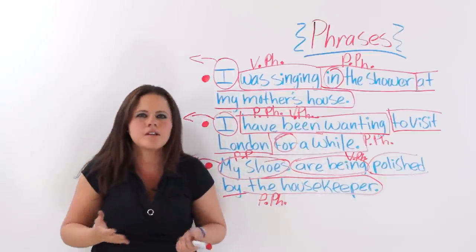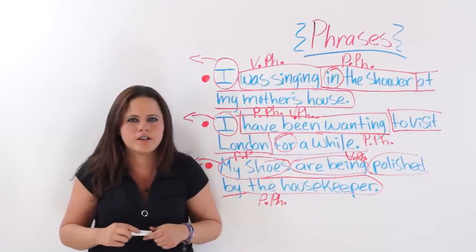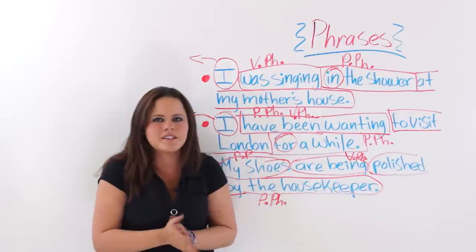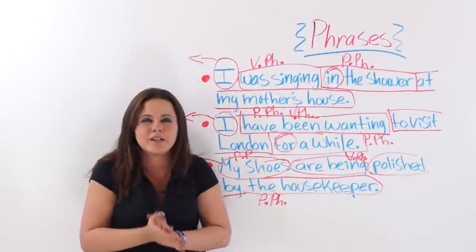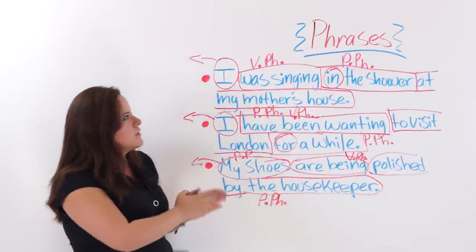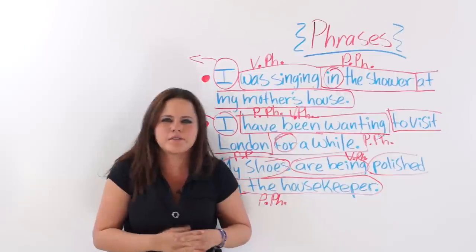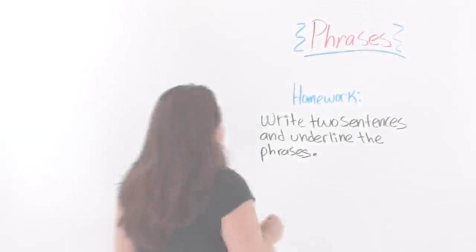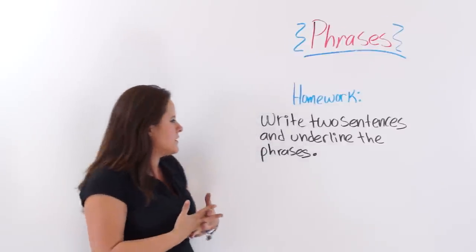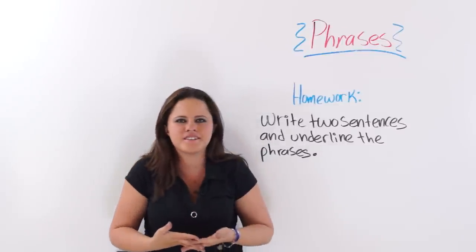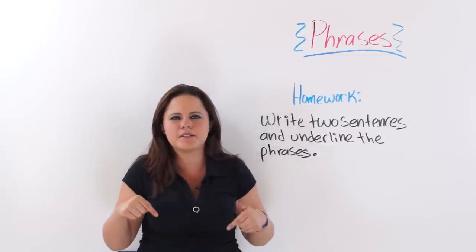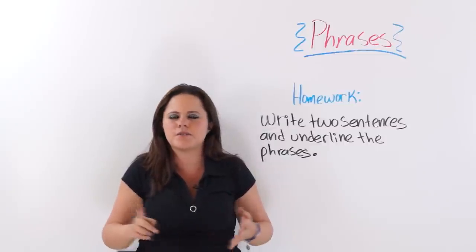I hope this is not too confusing. If you look up more videos on phrases later on, you will get this a little bit more concretely. Let me move on to some homework, because you need to practice to improve your English and get used to this grammatical structure. For homework, you are going to practice by writing two sentences and underlining the phrases. For those of you who have a workbook, just do it in your workbook. If you don't, please leave your homework in the comment section below this video, along with any comment, suggestion, or question you may have.